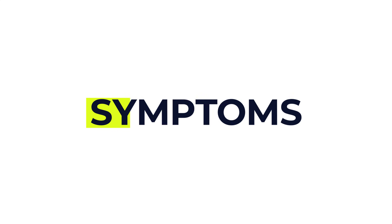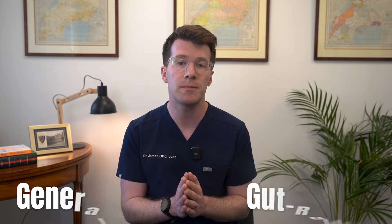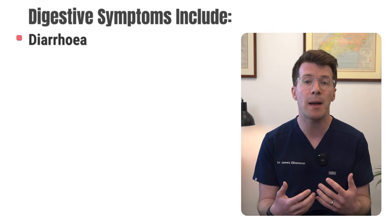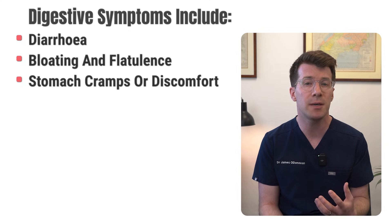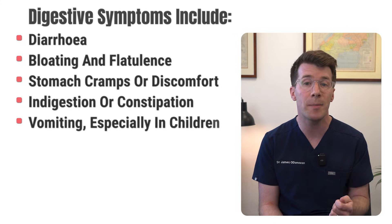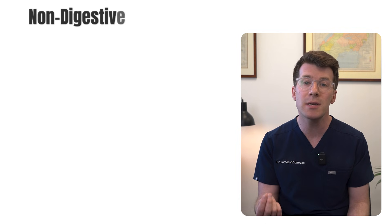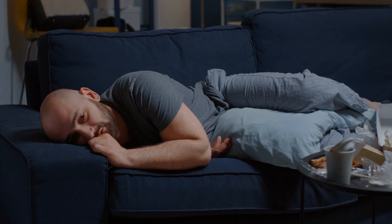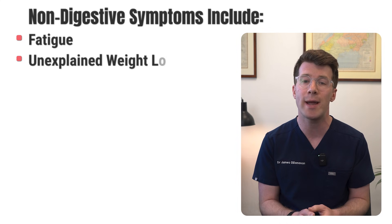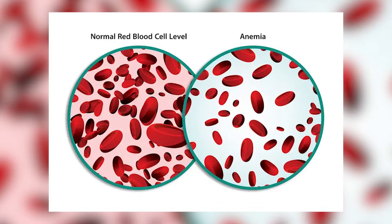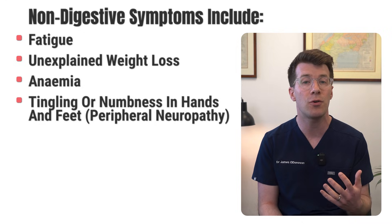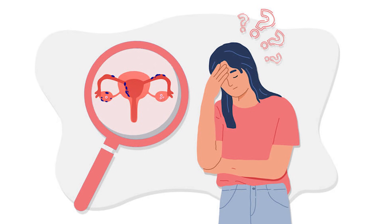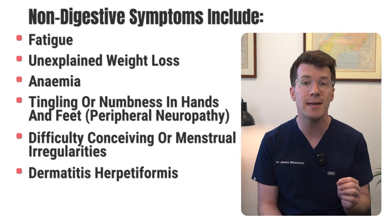Symptoms can vary widely and they might be gut-related or more general. Digestive symptoms can include diarrhea, which might be pale, greasy or foul-smelling, bloating and flatulence, stomach cramps or discomfort, indigestion or constipation, or even vomiting, especially in children. Other non-digestive symptoms include fatigue — often due to iron or vitamin deficiencies — unexplained weight loss, anemia from iron, folate or vitamin B12 deficiency, tingling or numbness in the hands and feet (peripheral neuropathy), and difficulty conceiving or menstrual irregularities.